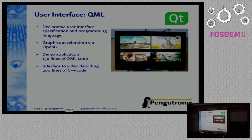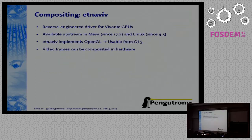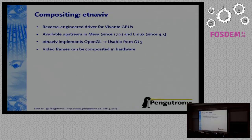We are using OpenGL for the UI. The OpenGL driver is usually from Vivante and is a blob driver, but we have an alternative: the EtnaViv driver, which is a reverse-engineered driver for the Vivante GPU. It has been available upstream in Mesa since version 17 and in Linux since 4.5. It implements OpenGL, so we can use it from Qt to composite our user interface and especially the video frames in hardware — which is really important because we don't want to do that copying in software.